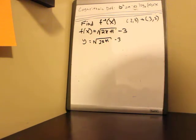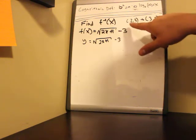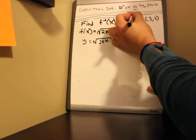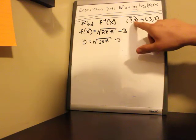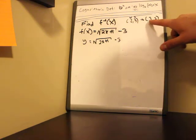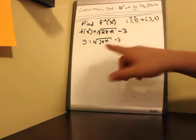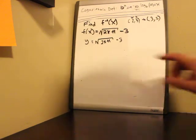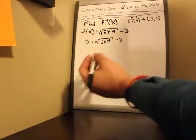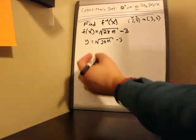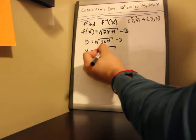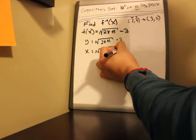Now remember that when we apply the inverse, we switch the input with the output. So we have a point up here: (2, 3). In order to find the inverse of that point, we switch x — our x becomes our y and our y becomes our x. So that's why we get (3, 2). We just basically switch them. That's the same thing here with the equation. We've got to switch the y into the x and then our x into the y. That's applying the property of an inverse. So we get x equals the square root of 2y plus 1 minus 3.